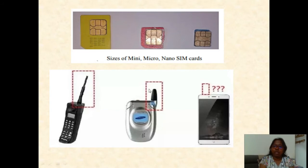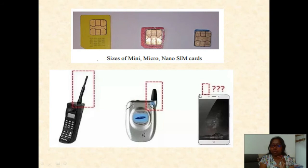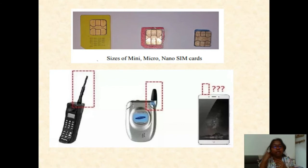The first mobile phone had an antenna of a certain length. In between, we had a mobile phone with an antenna shorter than the first one. But now we see no antennas — the antenna is already built inside the mobile phone and is not visible. To this level, we are seeing that electronic devices have been modified and changed as per the technological requirement.